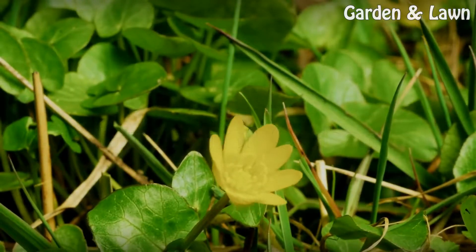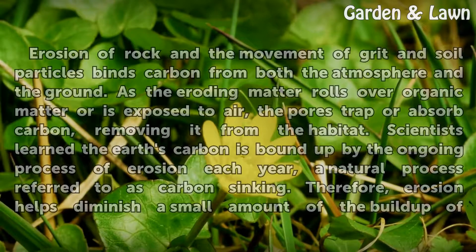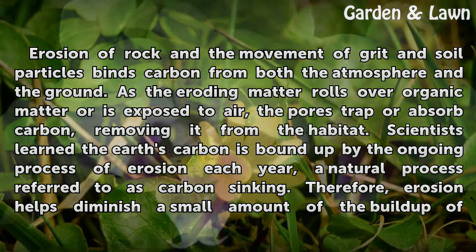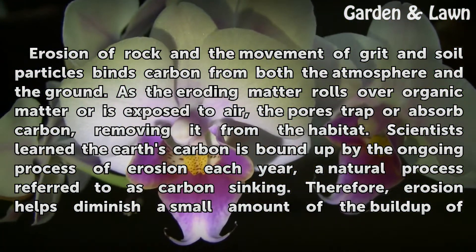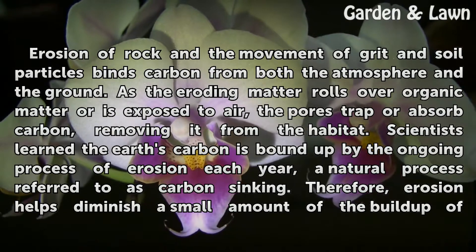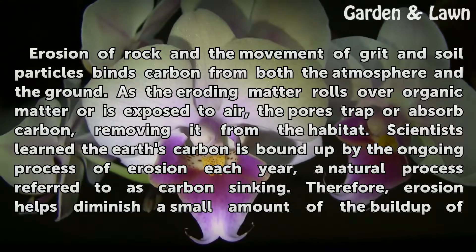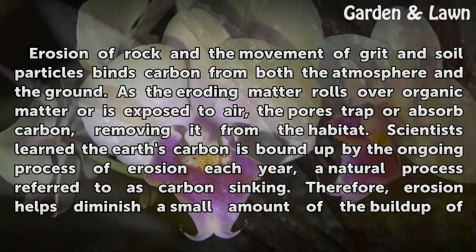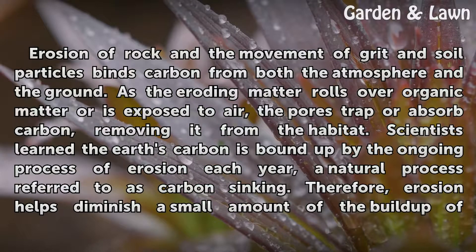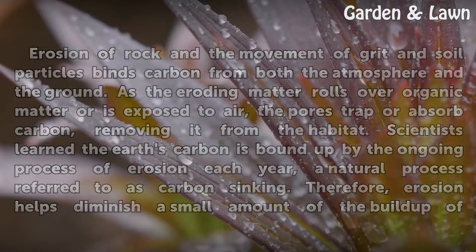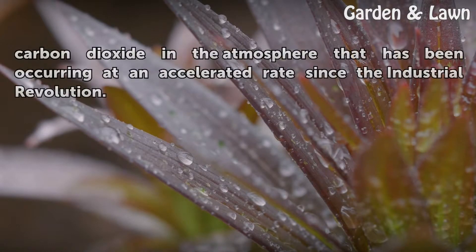Binding of Carbon. Erosion of rock and the movement of grit and soil particles binds carbon from both the atmosphere and the ground. As the eroding matter rolls over organic matter and is exposed to air, the pores trap or absorb carbon, removing it from the habitat. Scientists learn the Earth's carbon is bound up by the ongoing process of erosion each year, a natural process referred to as carbon sinking. Therefore, erosion helps diminish a small amount of the build-up of carbon dioxide in the atmosphere that has been occurring at an accelerated rate since the Industrial Revolution.